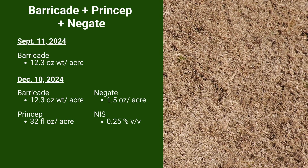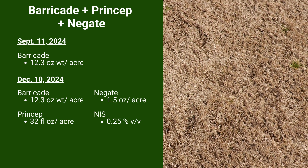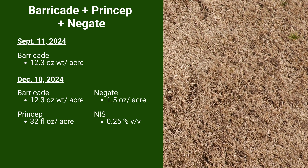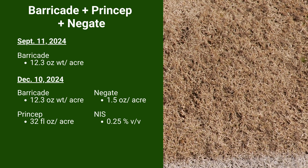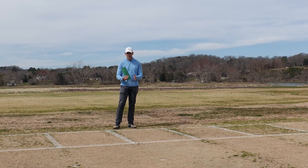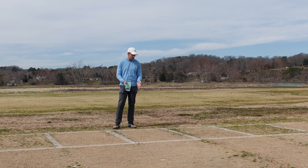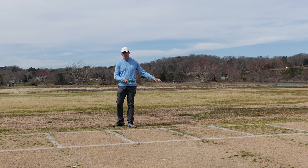Not only do we have different modes of action, we have pre-emergence chemistry mixed with post-emergence chemistry. Anything that may have broken through that early Barricade treatment, the Princep and the Negate could help control, and we're also introducing additional Barricade residual in the soil. You can see here, compared to the plot we just left, there's a marked increase in control from having two applications in our program rather than just the single Barricade alone.